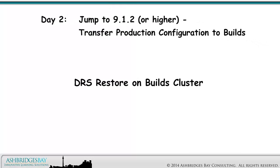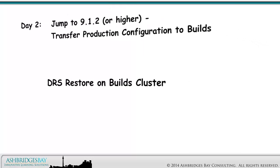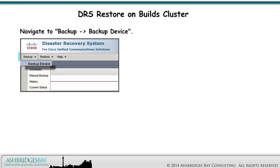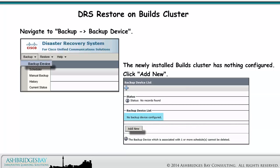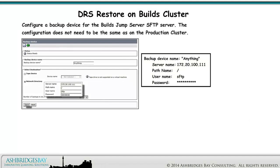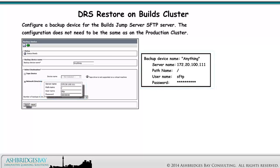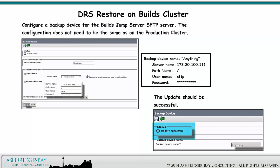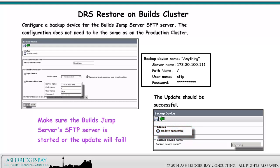Next, we do a DRS Restore on the Builds Cluster. Navigate to Backup, Backup Device. The newly installed Builds Cluster has nothing configured — click Add New. Configure a backup device for the BuildsJump Server SFTP Server. The configuration does not need to be the same as on the Production Cluster. The update should be successful. Make sure the BuildsJump Server's SFTP Server is started or the update will fail.